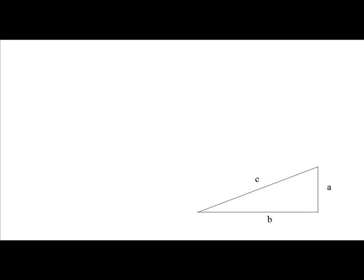I would like to derive the Pythagorean Theorem using algebra. So let's start with a right triangle that has a hypotenuse of length C, a height of length A, and a base of length B.